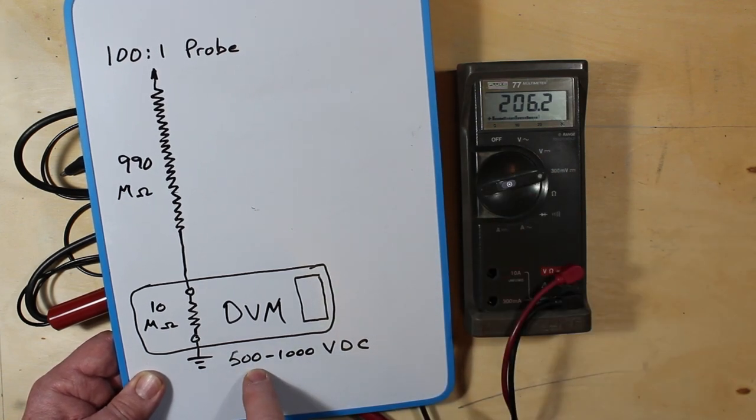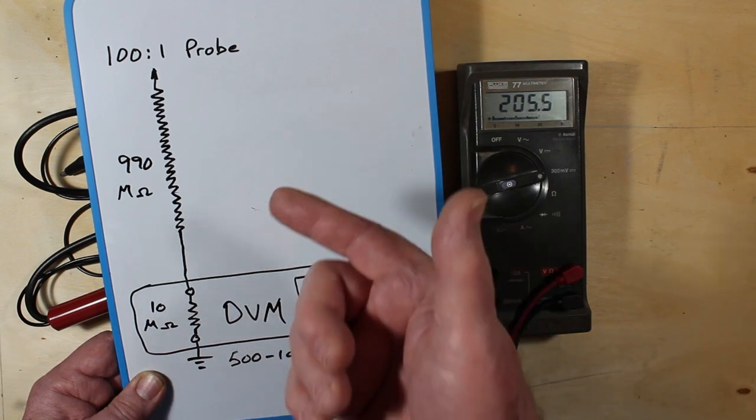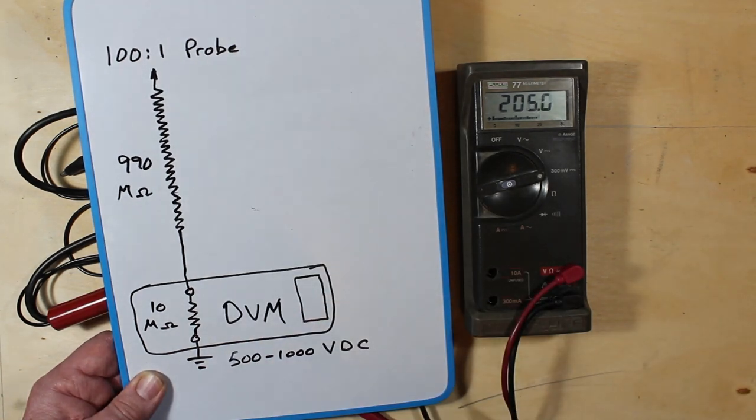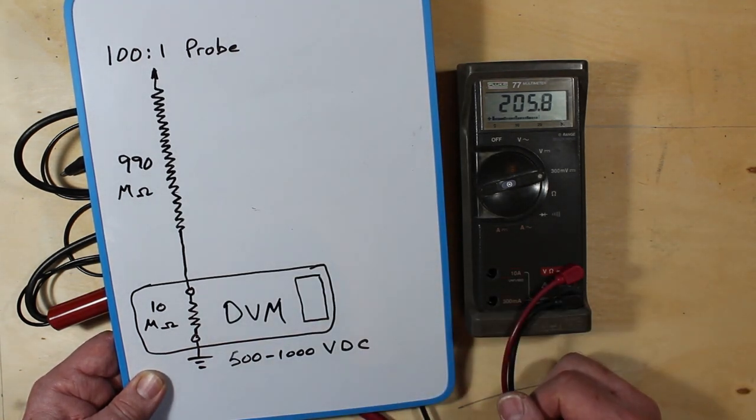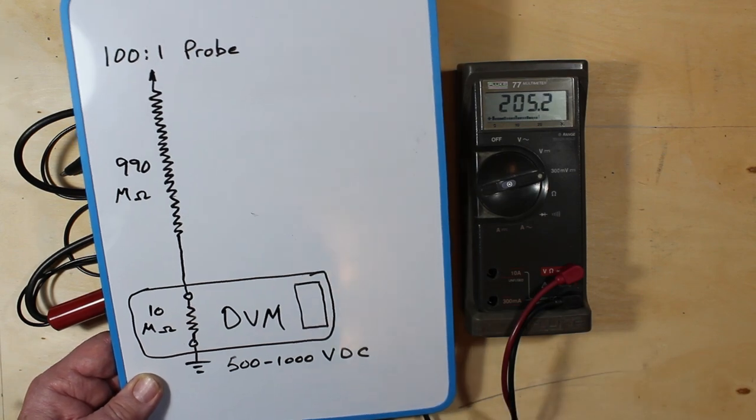One of my meters only goes to 500 volts. That still, if that's a 30 kV probe, that's the maximum for that. Be very careful with this sort of thing.